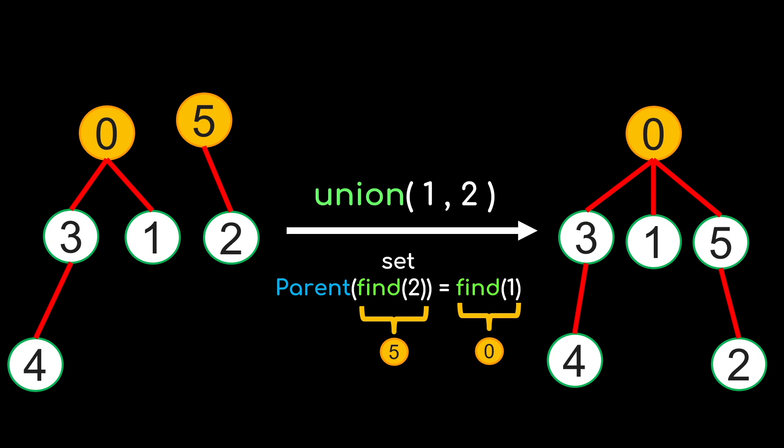Well, in this new interpretation, the representatives are the roots of the trees. So if we want to union two trees, we can just set the root of one tree to be the child of another.